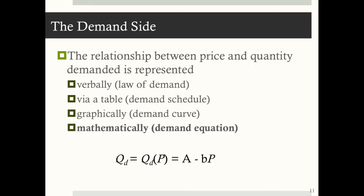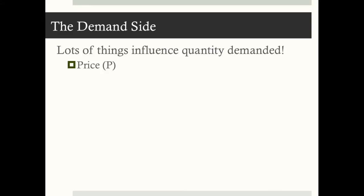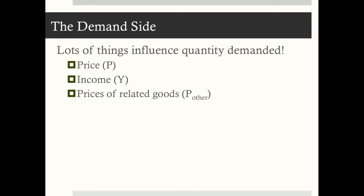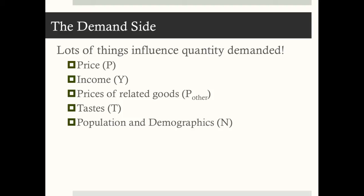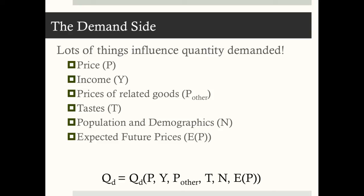Sometimes you'll see general notation written as Q sub D parentheses P parentheses, which is read as 'quantity demanded depends on price' or 'quantity demanded is a function of price.' We know that many things other than price influence quantity demanded: income, prices of related goods, tastes or preferences, population and demographics, and expected future prices. A more complete demand equation may include one, two, or all of these variables.